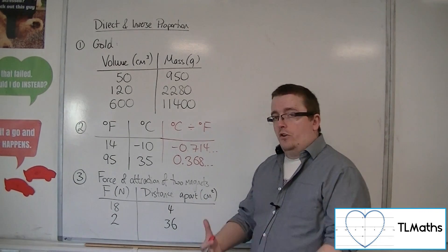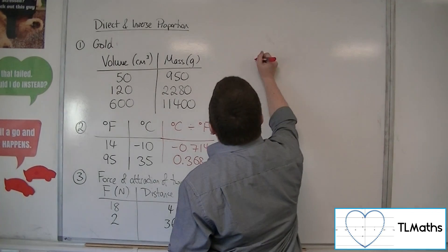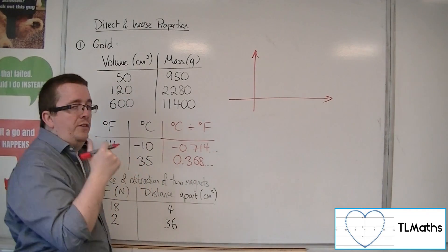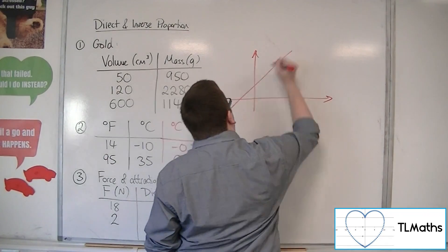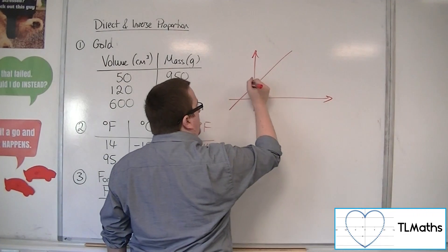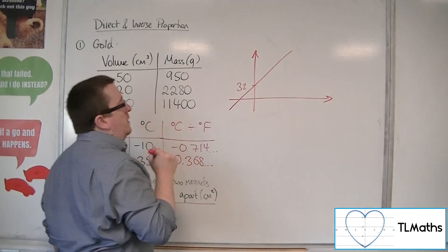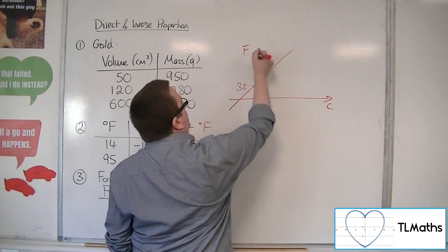But they're not directly proportional. And you can see that when you plot a graph of degrees centigrade against degrees Fahrenheit. Because what you'll find is a graph that goes through, well, that would be at 32, if memory serves. Where this would be centigrade, that would be Fahrenheit.